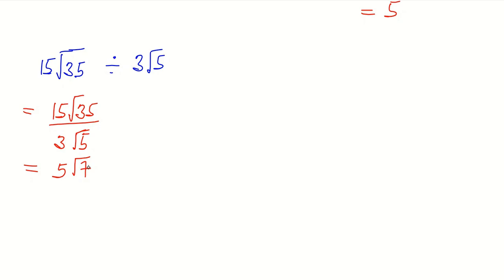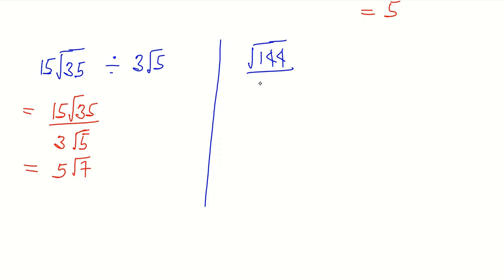Now consider the next example: square root of 144 divided by square root of 2. Straightaway, we know that 2 goes into 144 seventy-two times, so our answer becomes square root of 72. But 72 is not in its reduced or simplest form, which means we have to break our answer down further.